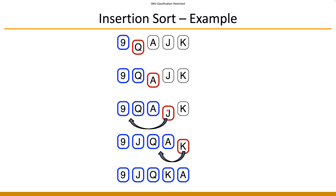Now you pick up the third element to process, which is J. J is smaller than A so you can move; J is smaller than Q so you can still move; but J is actually greater than nine, so you stop. J is now inserted between the original elements nine and Q.